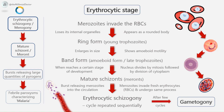As the ring form develops, it enlarges in size, becomes irregular in shape, and shows amoeboid motility. This is called the band form, amoeboid form, or late trophozoite form. When the amoeboid form reaches a certain stage of development, its nucleus starts dividing by mitosis, followed by division of the cytoplasm, to become mature schizonts or meronts. A mature schizont contains 8 to 32 merozoites and hemozoin. The mature schizont bursts, releasing the merozoites into circulation. The merozoites invade fresh erythrocytes, within which they go through the same process of development. This cycle of erythrocytic schizogony or merogony is repeated sequentially, leading to progressive increase in parasitemia until it is arrested by the development of host immune response.